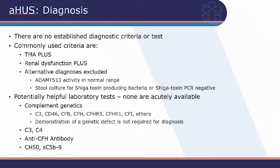Just like TTP, AHUS can affect brain, eyes, and GI tract. What makes AHUS particularly difficult is that there are no established diagnostic criteria or tests. Unlike TTP with ADAMTS13 — a specific, highly useful test — there is nothing like that for AHUS. When you suspect AHUS, you must have TMA and renal dysfunction, and at minimum exclude TTP and Shiga toxin-producing bacterial HUS. There are potentially helpful complement tests, but they won't be useful in the emergency room and are something a hematology consultant may order later.